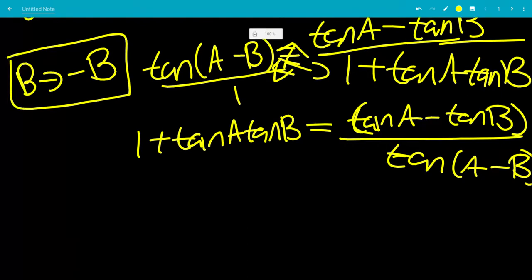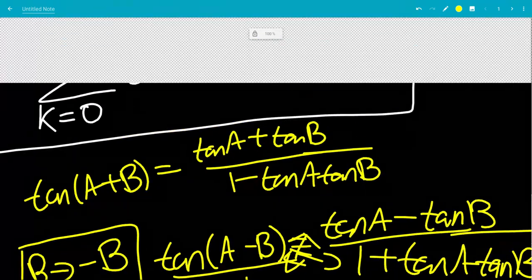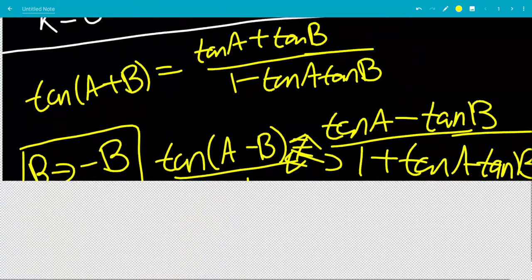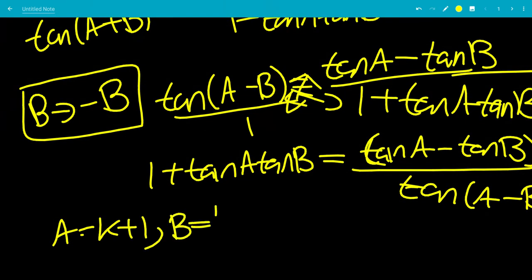Now we can plug in: we have k and k plus 1, so a equals k plus 1 and b equals k, because tangent k times tangent k plus 1 is the same thing as tangent k plus 1 times tangent k.